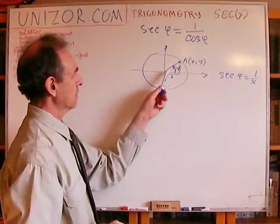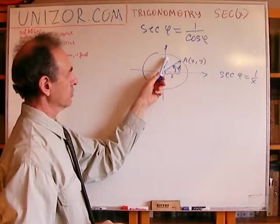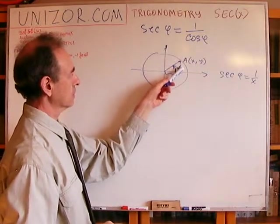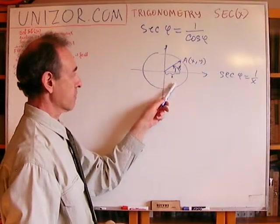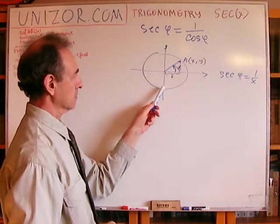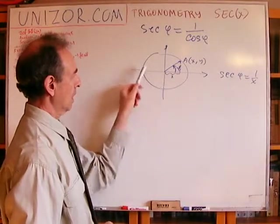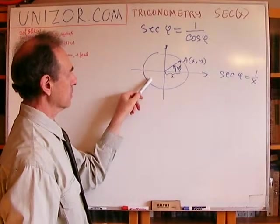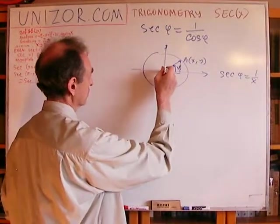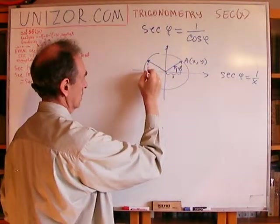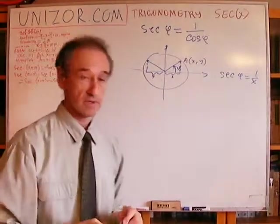Now, obviously, if the angle is between zero and pi over 2, in the first quadrant, abscissa is positive, as well as in the fourth quadrant, when an angle is greater than 3 pi over 2. And other cases, second and third quadrant, the abscissa is negative. And when it's negative, obviously, the secant is negative as well.